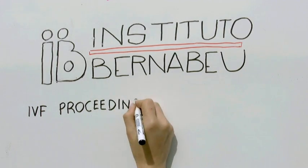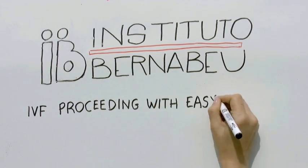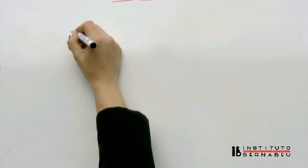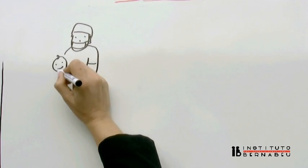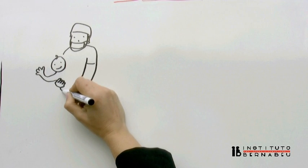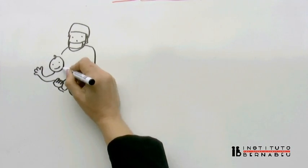IVF Explained Simply. Since the first IVF baby, Louise Brown, was born in England in 1978, more than 5 million children have been born using this technique.